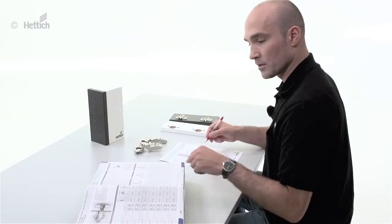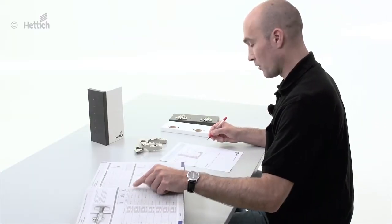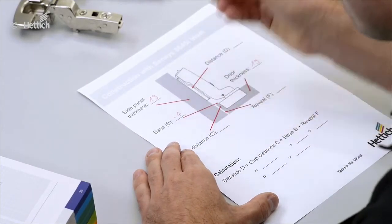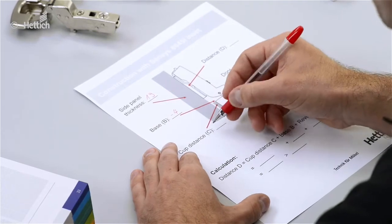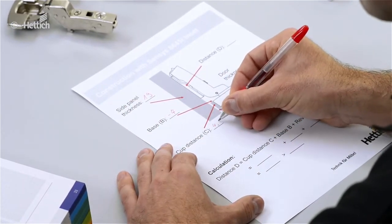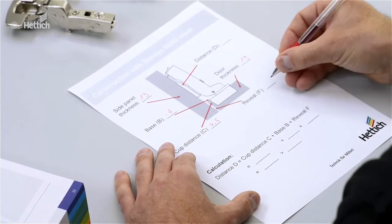We have the base B with a value of minus 4 millimeters as you can see in the catalog. The cup distance C is 4.5 millimeters in this example and the reveal is 2 millimeters.